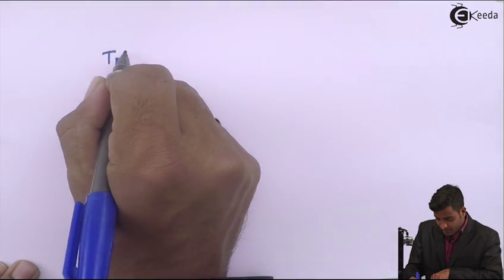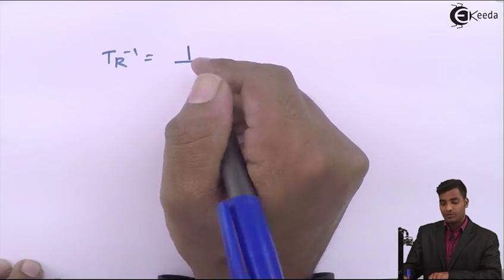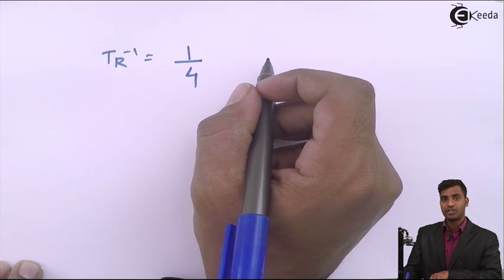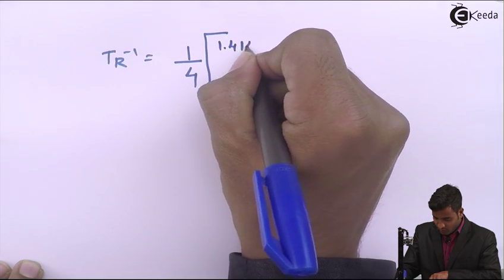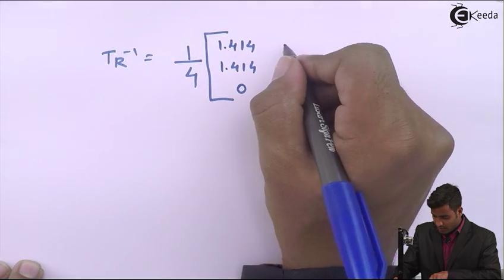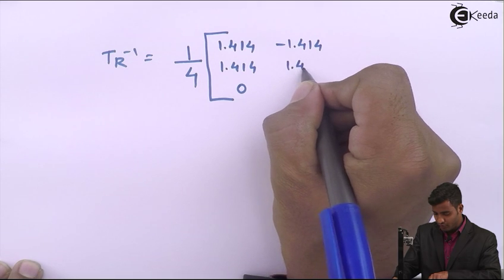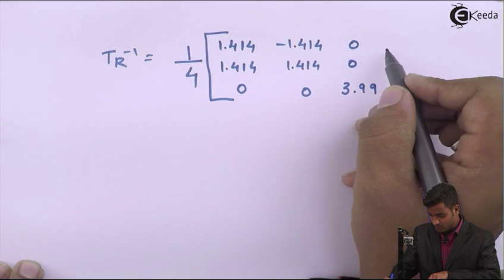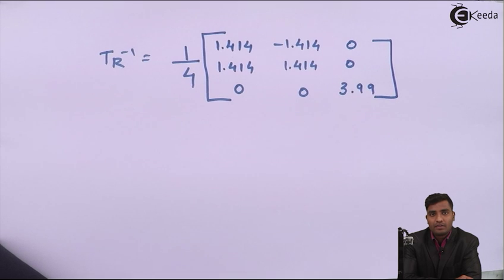So TR⁻¹ = (1/4) × adjoint(TR), where adjoint(TR) = [1.414, −1.414, 0; 1.414, 1.414, 0; 0, 0, 3.99]. We have now successfully calculated the inverse of TR.